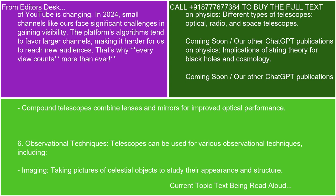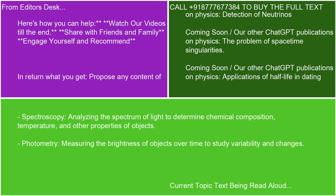6. Observational techniques. Telescopes can be used for various observational techniques, including imaging — taking pictures of celestial objects to study their appearance and structure — spectroscopy, analyzing the spectrum of light to determine chemical composition, temperature, and other properties of objects, and photometry, measuring the brightness of objects over time to study variability and changes.